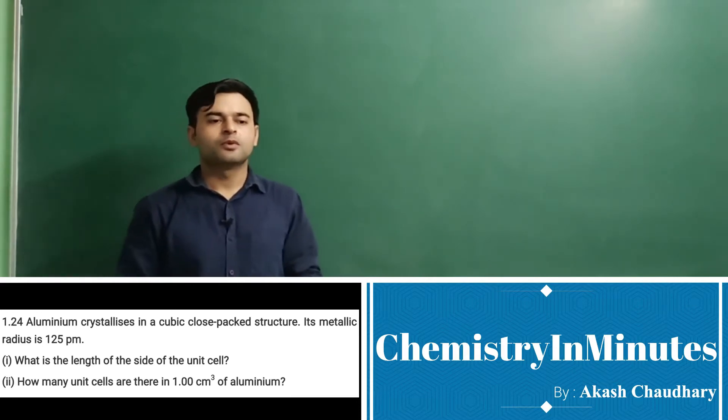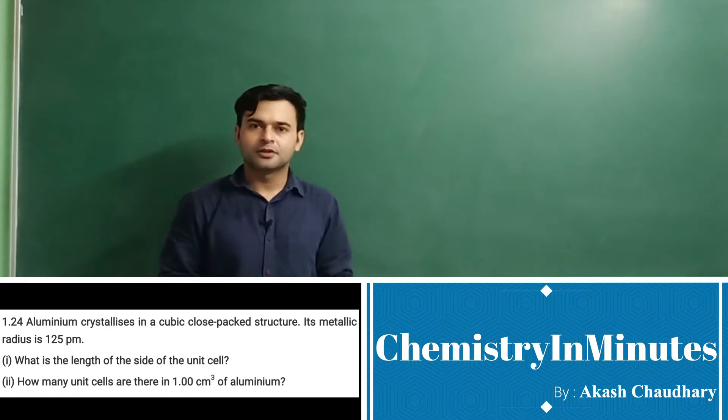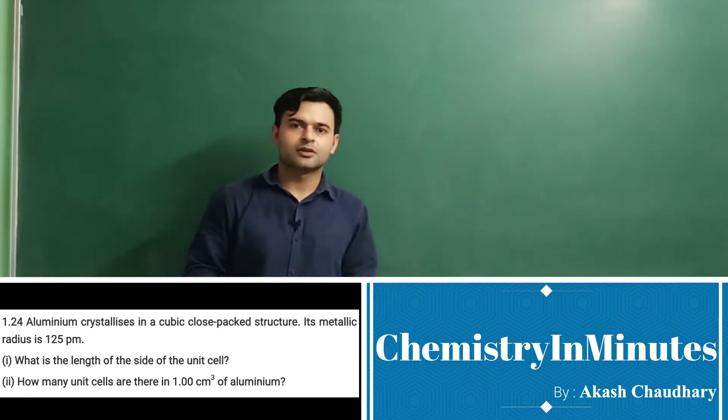Now first part, what is the length of the side of the unit cell? Second part is, how many unit cells are there in 1.00 centimeter cube of Aluminium. So let's start solving this question.